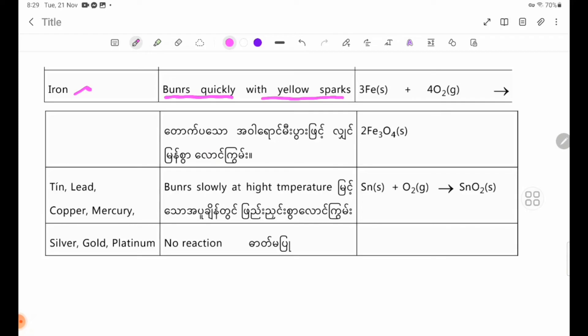Iron burns quickly with yellow sparks. The reaction produces Fe3O4, iron oxide.